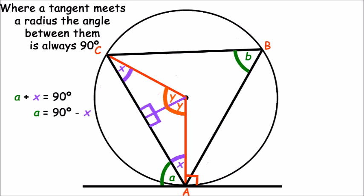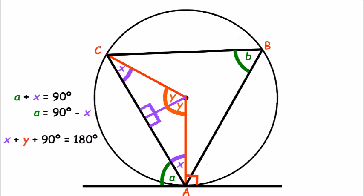We also know that the sum of the angles of a triangle is equal to 180 degrees. And so we know that X plus Y plus 90 degrees equals 180 degrees. And if we rearrange this in terms of Y, we get Y equals 90 degrees minus X. And so we can say that A equals Y.